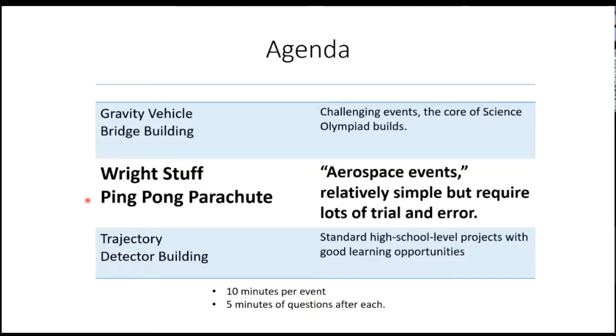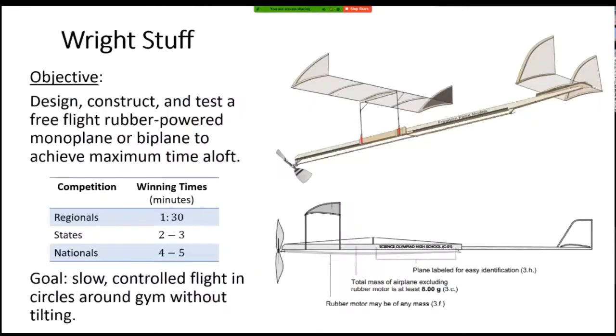Let's dive right in and start with Wright Stuff. The purpose of this event is to design, build, and test a free flight rubber powered airplane to achieve the maximum time aloft. This airplane looks something like this - it consists of a propeller, a wing (you can have up to two wings), and it's powered by a rubber band.